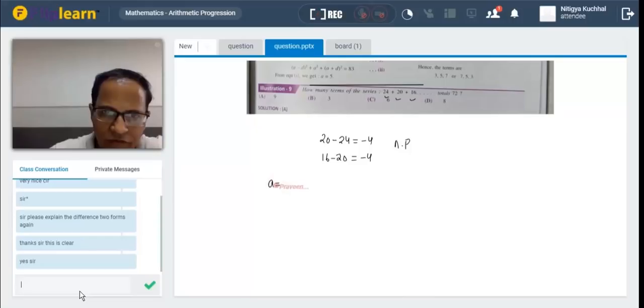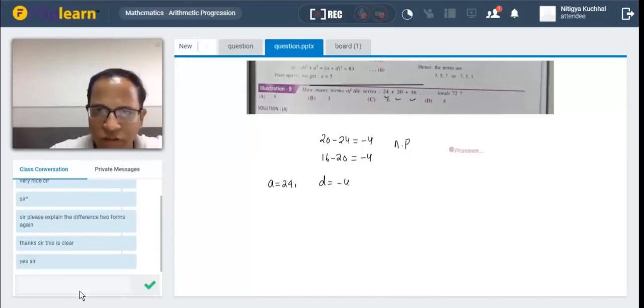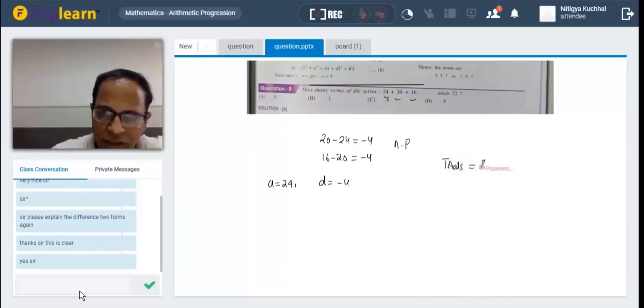So we have A is equal to 24. We have D is equal to minus 4 as I have told you. How many terms that totals. When you say totals, this is a very important thing. Totals. This means we are talking about the sum part, right.